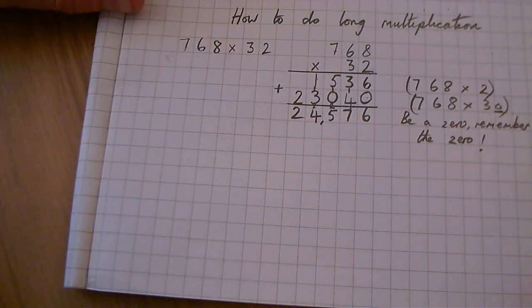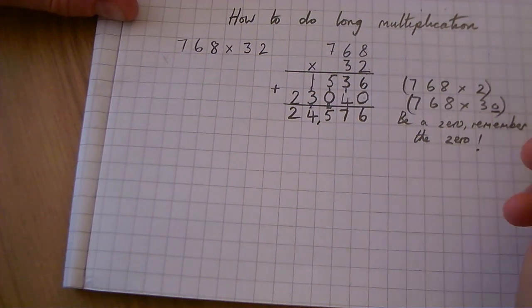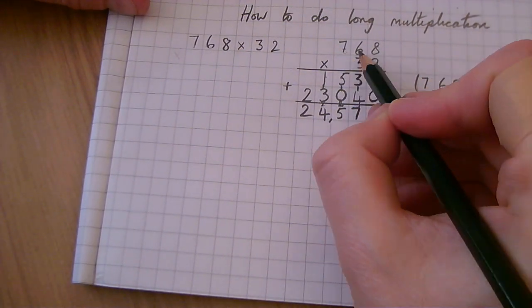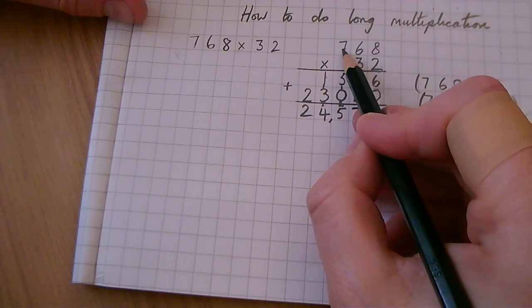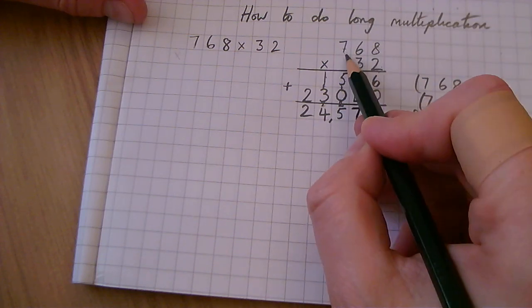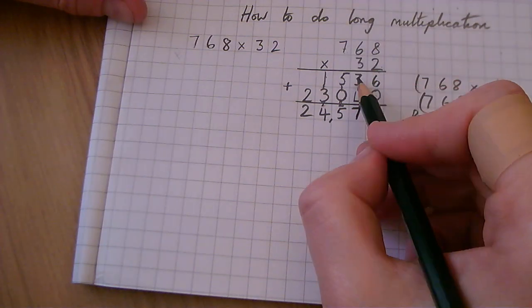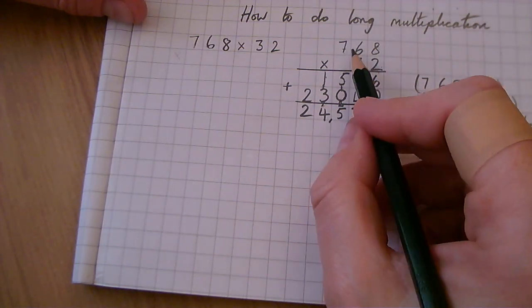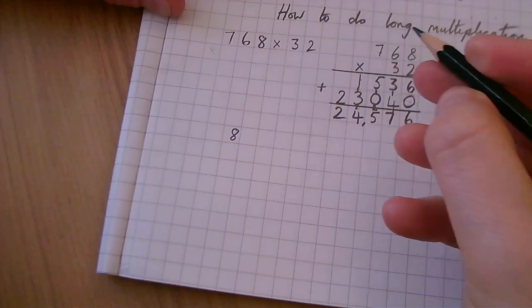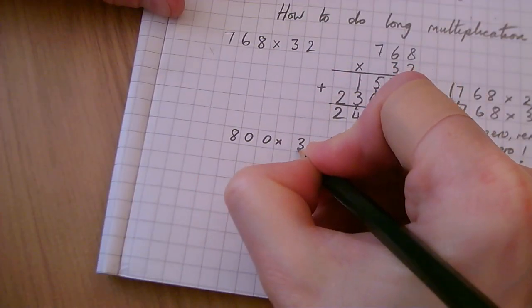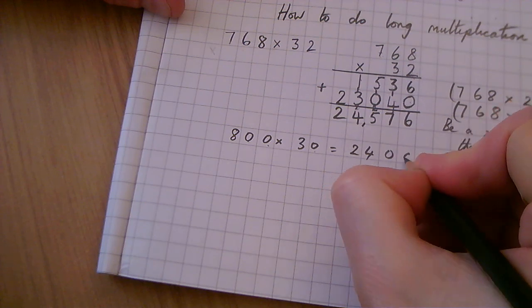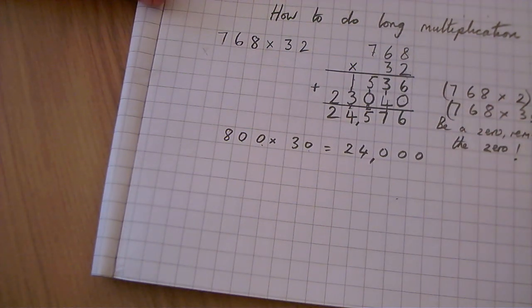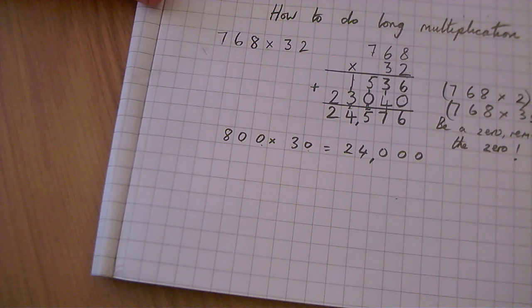Now if you wanted to just get an approximate feel if that was correct, what we could do is round this to the nearest 100, which would make 800, and round this to the nearest 10, which would be 30. So 768 to the nearest 100 is 800, and 32 to the nearest 10 is 30. And then 800 times 30 is 24,000. So it looks like it's approximately correct. So I'm feeling quite good that we've probably got the right answer.